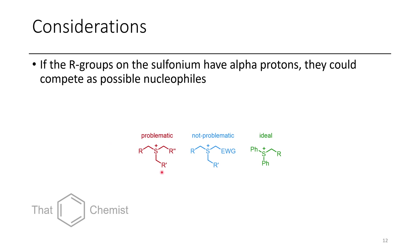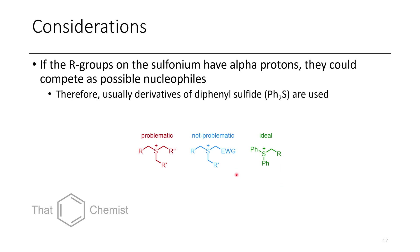One thing to consider when generating these ylids or the sulfonium salts that are precursors to ylids: if you have different R-groups connected to your sulfonium with alpha protons that are similarly acidic, you can get mixtures of Corey-Chaykovsky products. A trick is to use an electron-withdrawing group on your sulfonium — these protons will be much more acidic than at other positions, so you should only be deprotonating there. For maximum control, a bulky group without any alpha protons, such as a phenyl, ensures only one CH₂ position can be deprotonated.